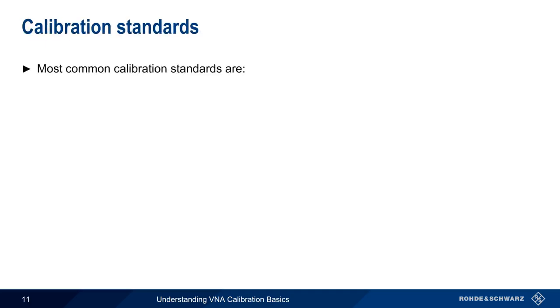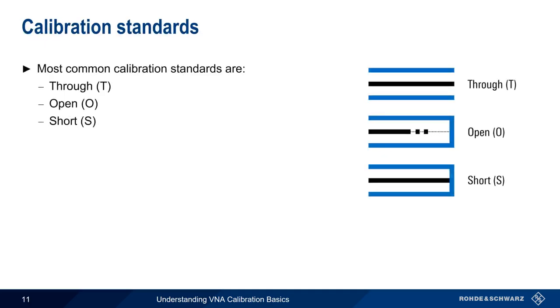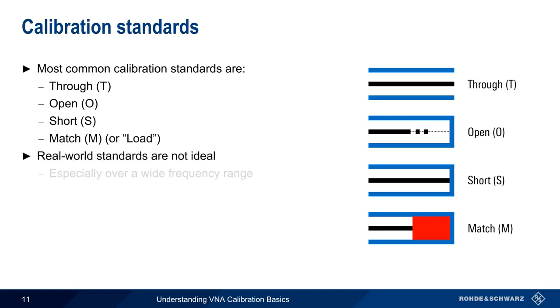The four most common calibration standards are through, open, short, and match. You'll sometimes hear match also referred to as load. The names and electrical properties of these calibration standards should be fairly self-explanatory. It is, however, important to keep in mind that even these rather straightforward standards are not ideal, especially over a wide frequency range. For example, if frequencies above 100 MHz, many opens start to develop capacitance. This is the reason why we need to provide our VNA with definitions for the standards that we're using. All opens are not created equal, so we can't use any random open during calibration and still expect accurate results.